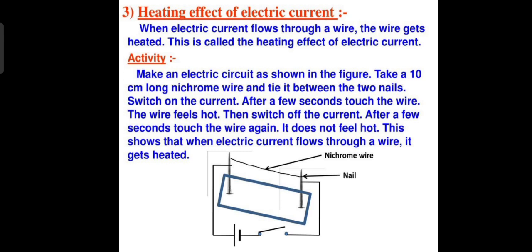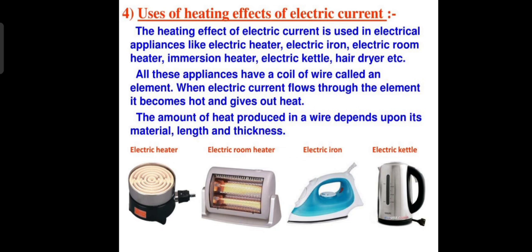That is called the heating effect of electrical current. Here an activity is given - you can take a screenshot and you have to read that activity. Here you can see the heat effect of electrical current. What are the uses of heating effect of electrical current? Electric room heater, electric iron, and electric kettle - these are different things which we use in our daily life or in our home. The heating effect of electrical current is used in electrical appliances like electric heater, electric iron, electric room heater, immersion heater, electric kettle, and hair dryer.